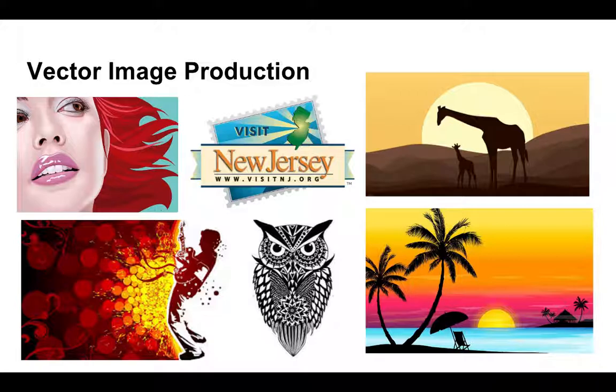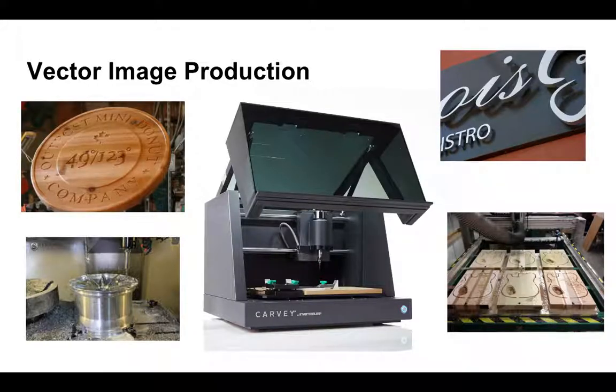Vector designs tend to have a clip art or artistic stylistic quality, like the sample images on the screen. This is really because vector files are made up of outlines which machines such as CNC equipment can follow. CNC routers can follow the lines to cut through wood, metals, or plastics — this is how a lot of guitars and various signs are made. Laser engravers can follow these lines to burn into wood, leather, and plastics for various products.